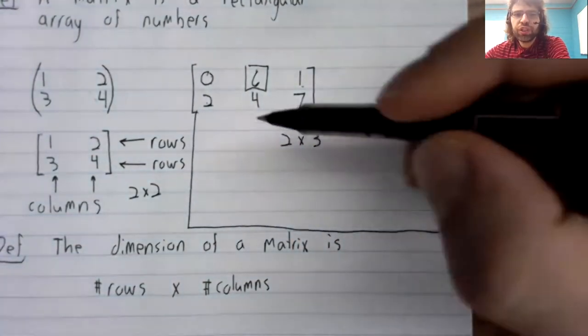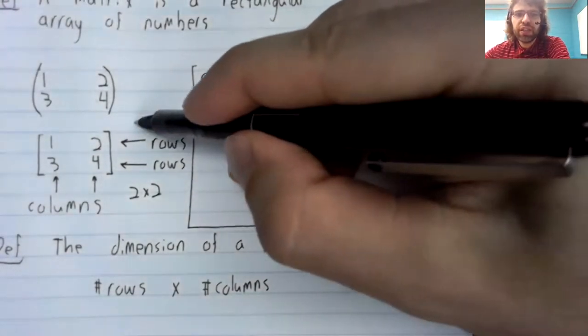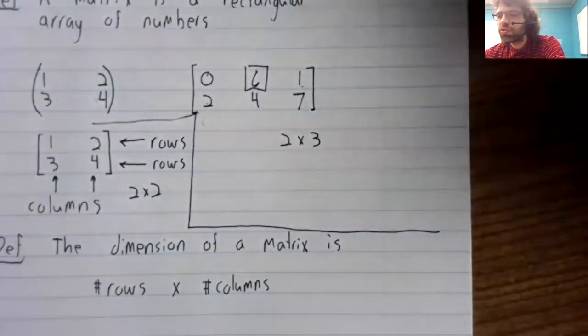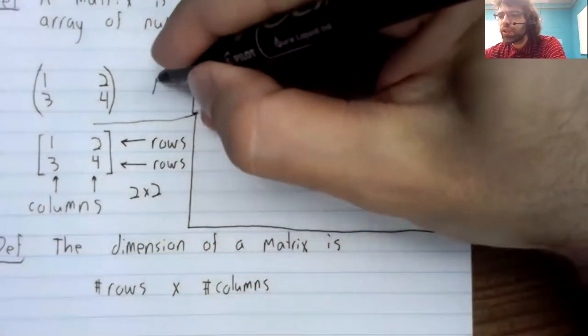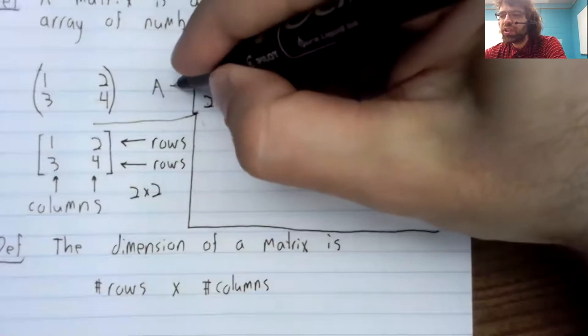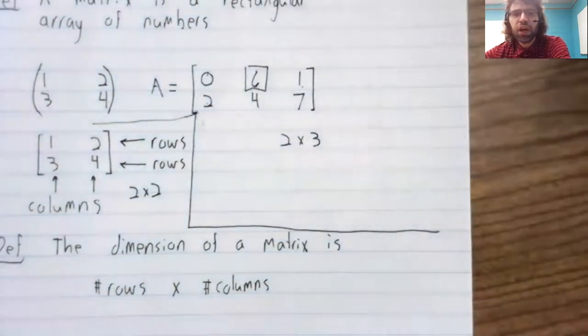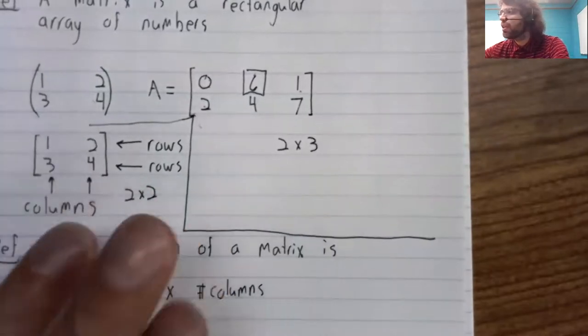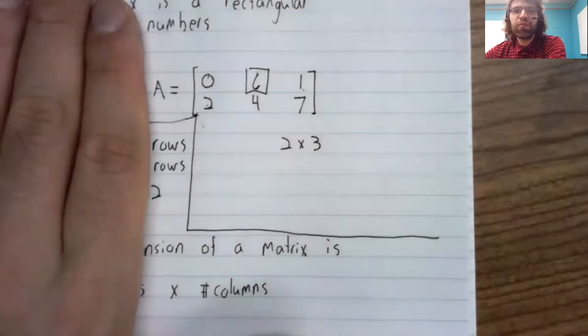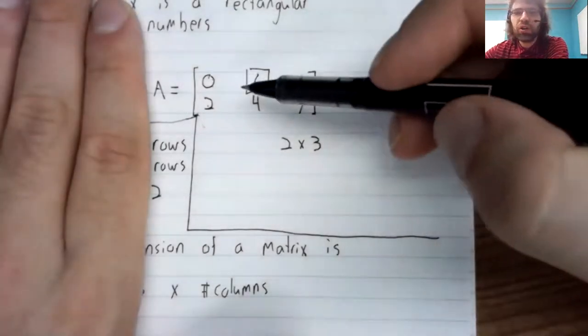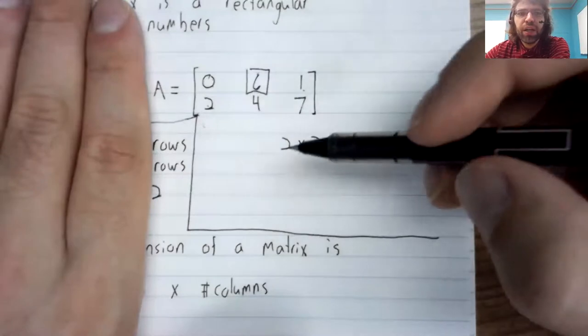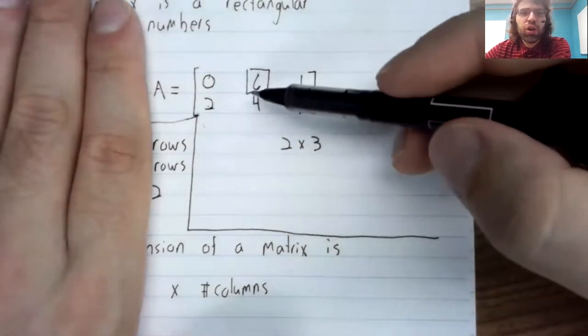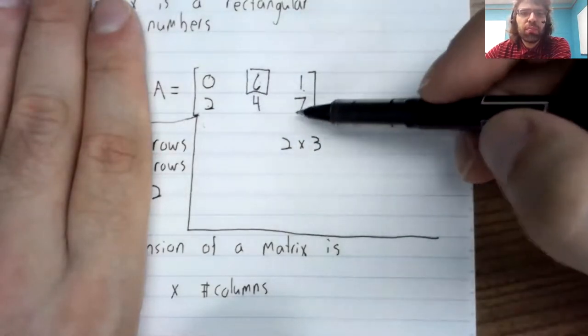The way this is traditionally done is as follows. You give matrices names that are capital letters, usually from the beginning of the alphabet. So we can call this capital A.